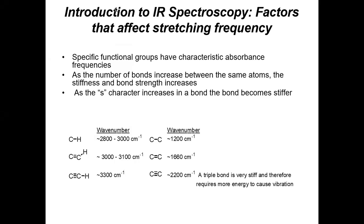In infrared, the only way you get a response from a functional group is if the frequency of the radiation matches the frequency of the bond. On the left side, we're talking about C-H sigma bonds, and as you go from sp3 to sp2 to sp, that bond gets shorter and stronger because carbon becomes more electronegative. On the other side, those two sp3 carbons only require a wave number of about 1200.